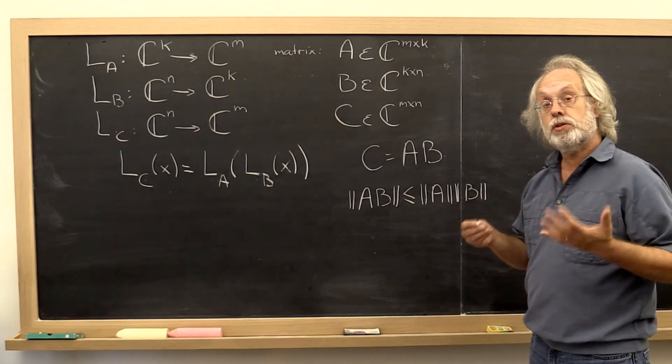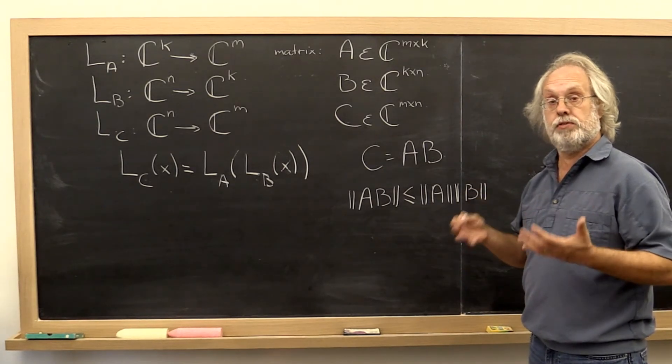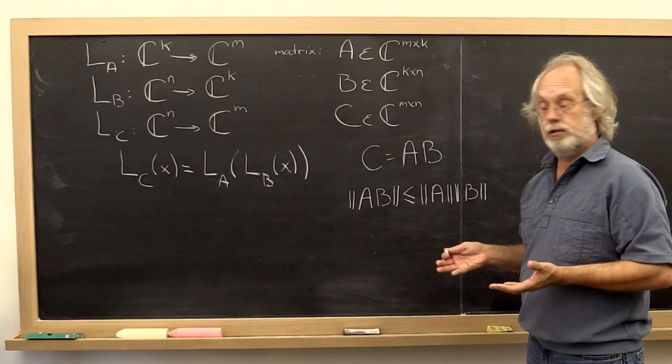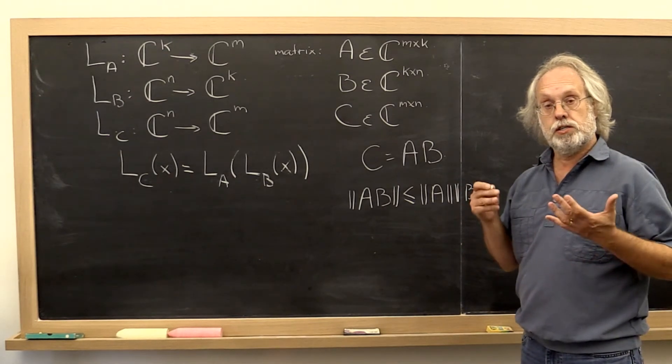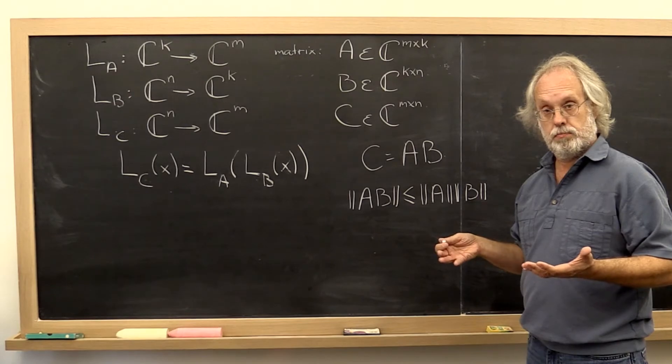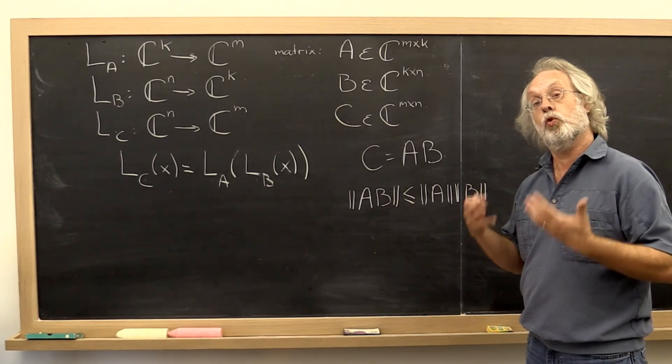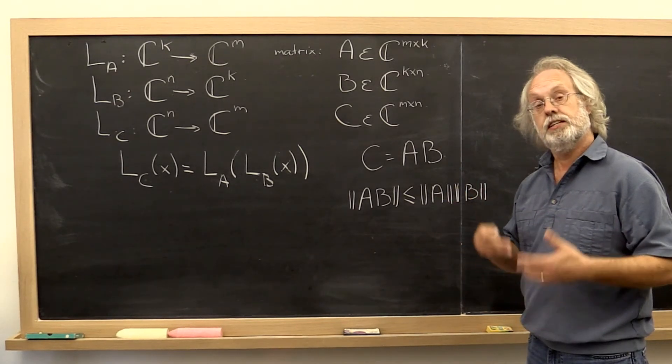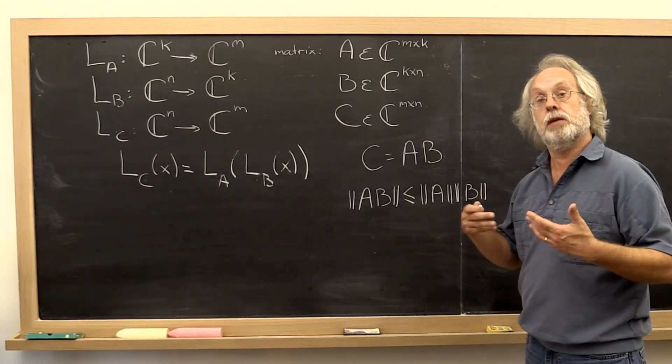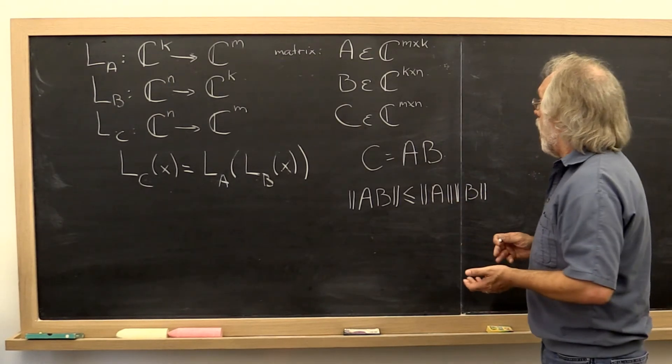Now, it turns out not all matrix norms have this property. The property is called submultiplicative norms. The property is that the norm is submultiplicative. The norm is said to be submultiplicative.